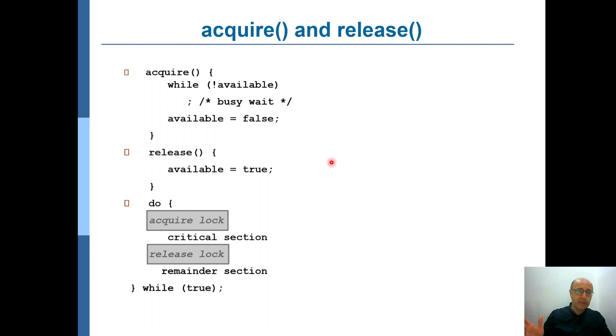So in a nutshell, mutex provides mutual exclusion when you enter a critical section. That means there can be only one process in its critical section while others are either waiting or they're in the remainder section, but no one else is in the critical section.